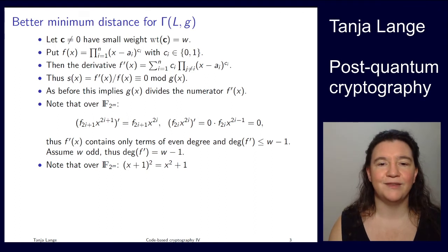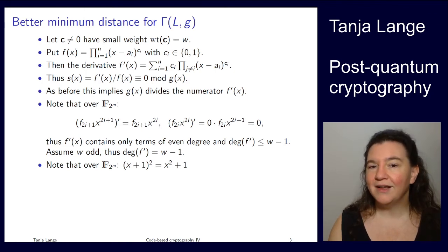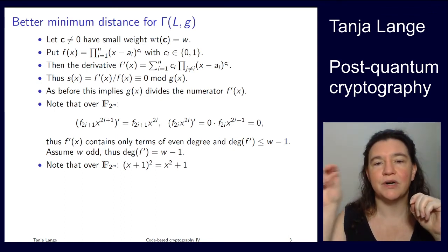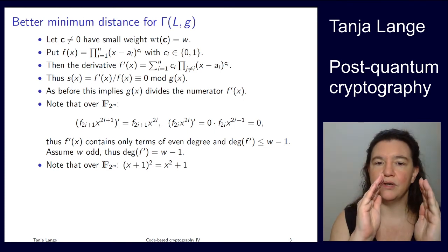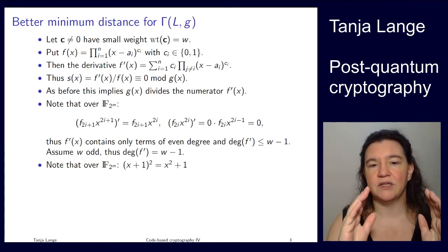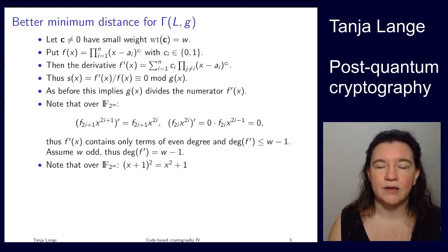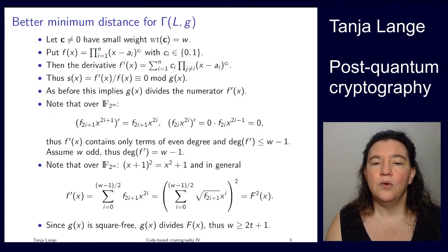We also know that over F2 we have the so-called freshman's dream: (x+1)² = x² + 1, because the 2x term disappears mod 2. So we can take the square of a sum and apply the square to every term individually. We can also go the other way: if we see an expression with only even exponents, we can factor out the square. That's what we do with our f' — since f' contains only even exponents, it is a perfect square, and we can write it as the square of some polynomial capital F of x.